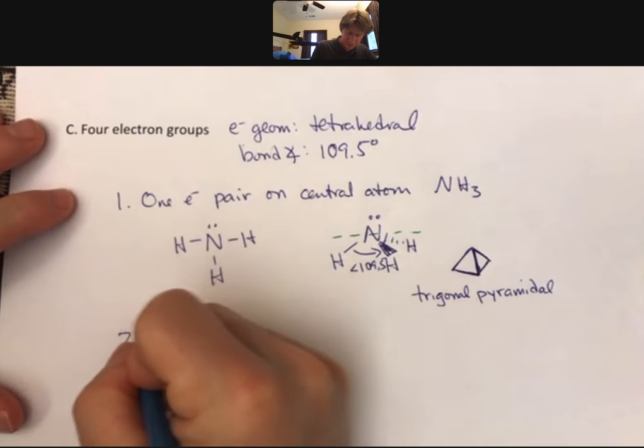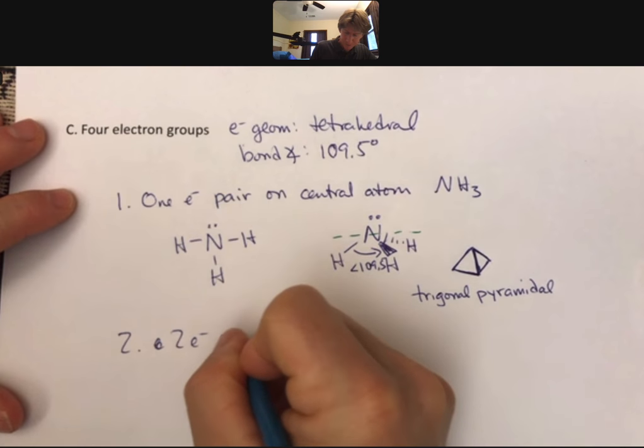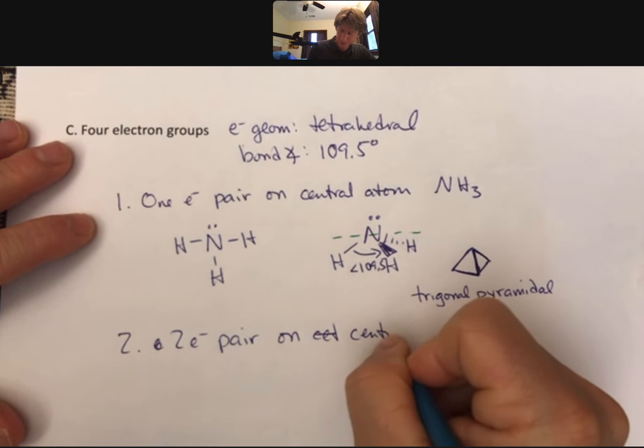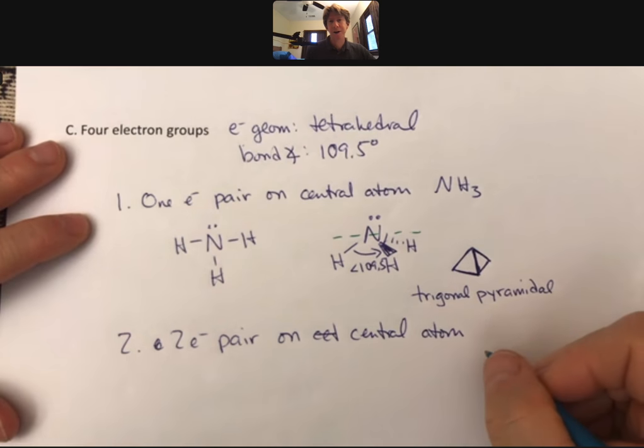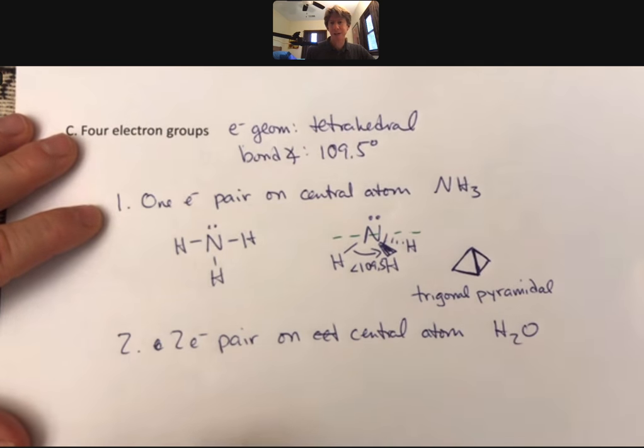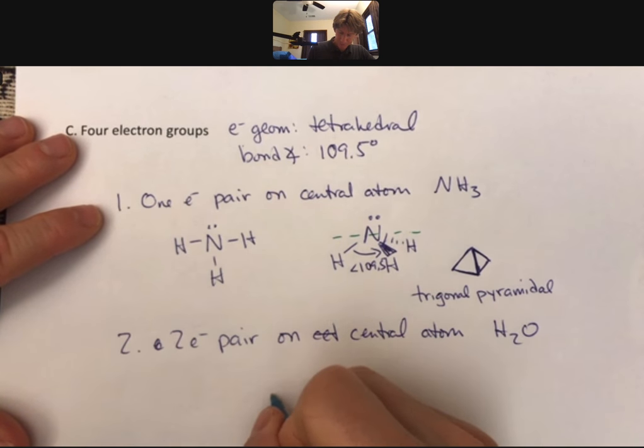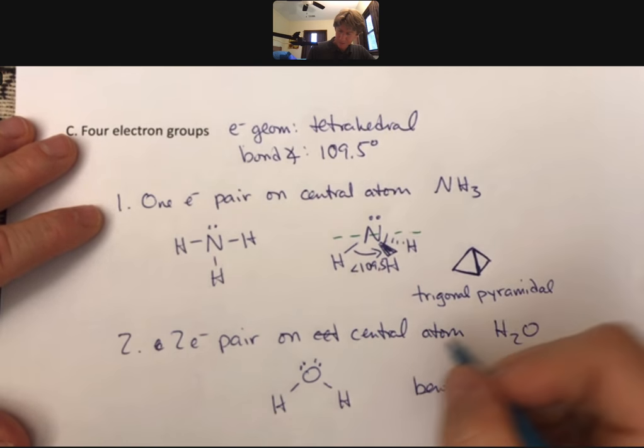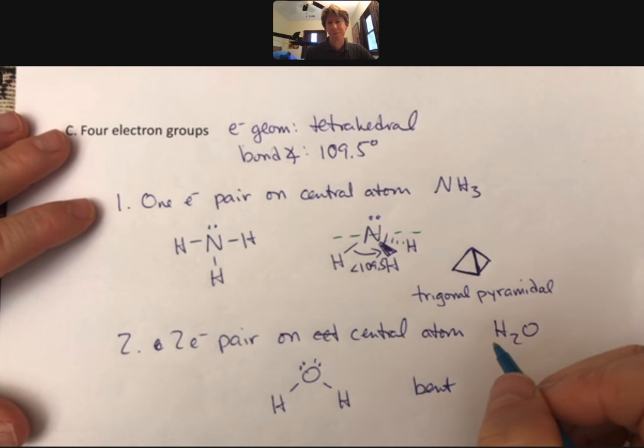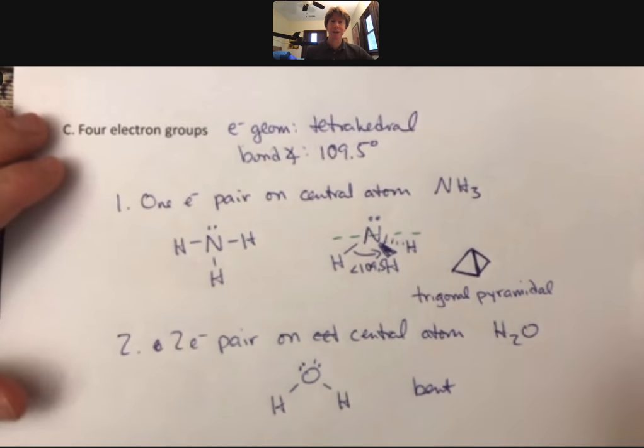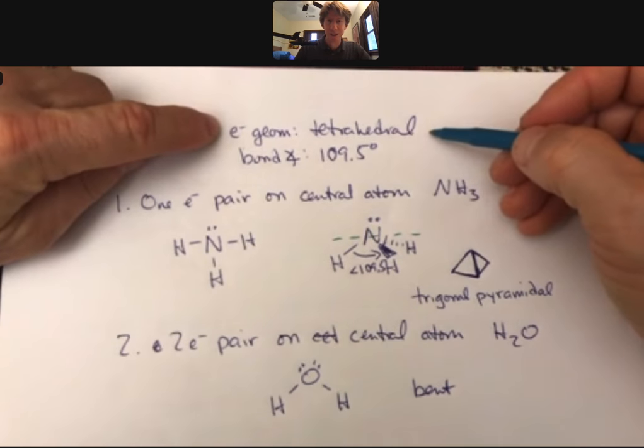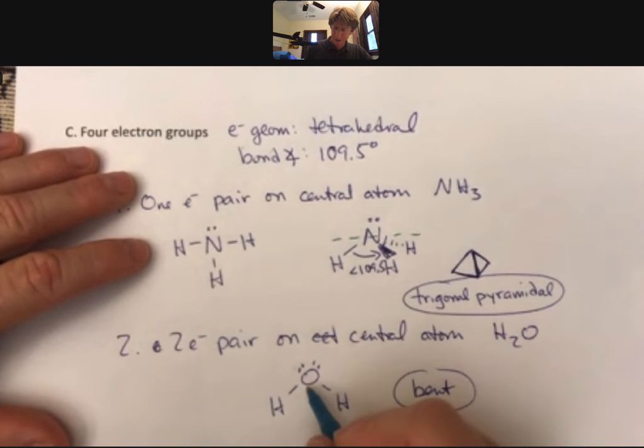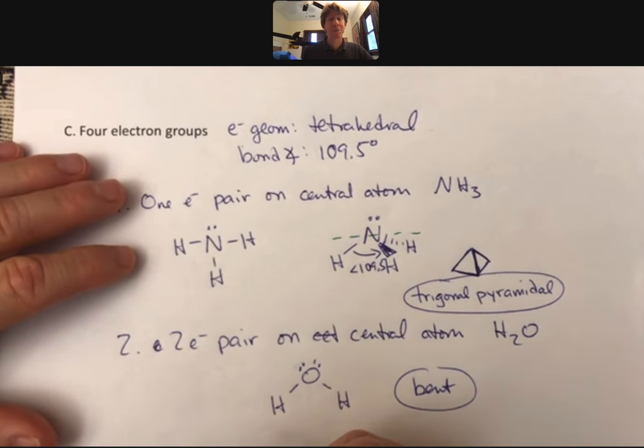For two electron pairs, again, on the central atom only. That's how we are determining our molecular geometry. We get H2O. And H2O, I'll even draw it. Its molecular geometry is bent. And that's what you need to know for electron geometry, for electron groups, always tetrahedral. Molecular geometry could be either trigonal pyramidal, or bent, depending upon the number of electron pairs on the central atom.